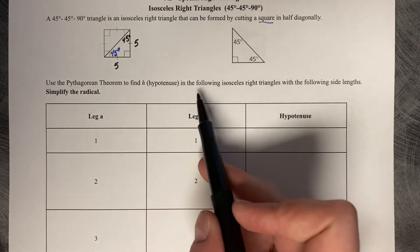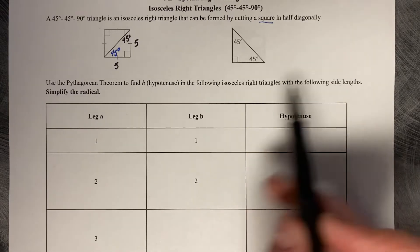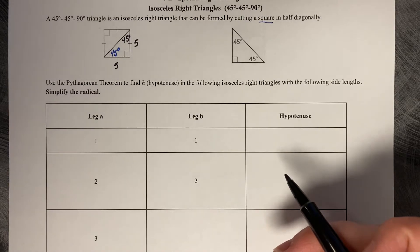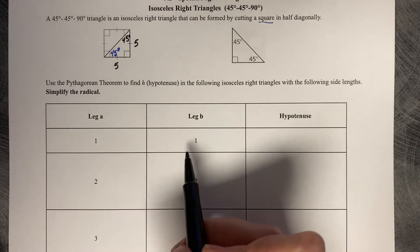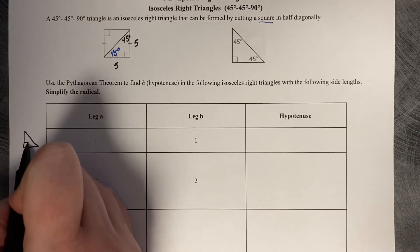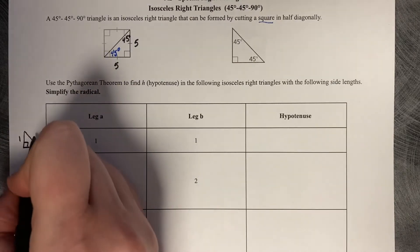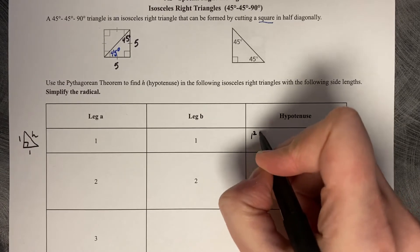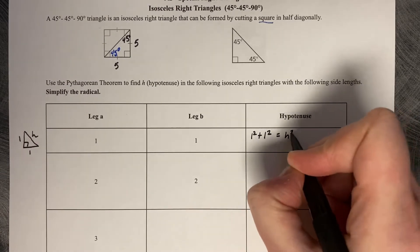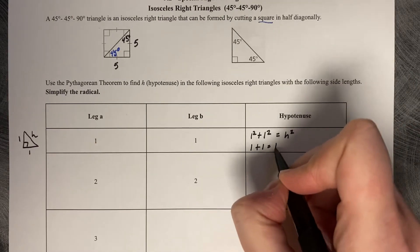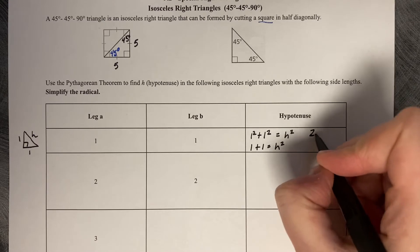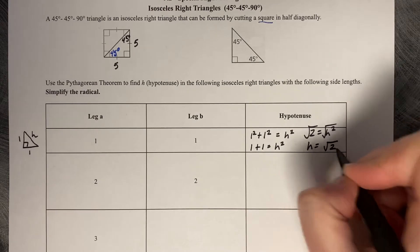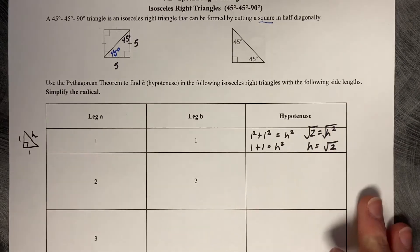Use the Pythagorean theorem to find the hypotenuse in isosceles right triangles and simplify the radical — if you don't simplify the radical, the pattern won't appear. With a leg length of one and a leg length of one, we need to find h. One squared plus one squared equals h squared; one plus one equals h squared; two equals h squared; so h equals the square root of two. We can't see the pattern yet, so let's continue.